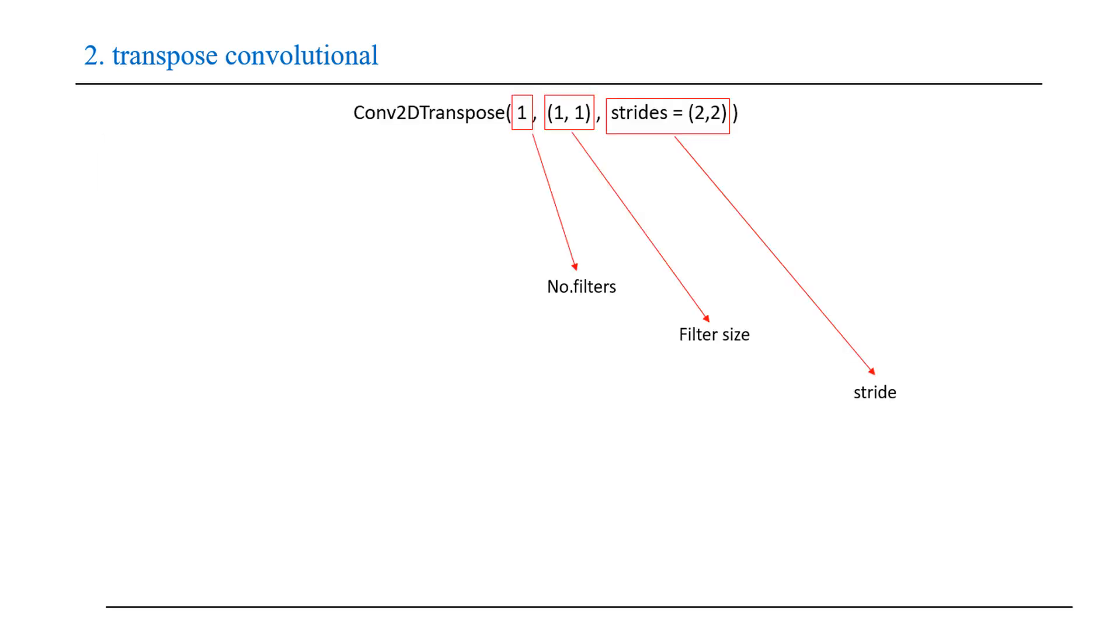Here is an example. First we define number of filters, filter size, and stride. Stride is the key element in transpose convolution. If we set stride equals 1, we won't have any upsampling; we get output size equal to input size.